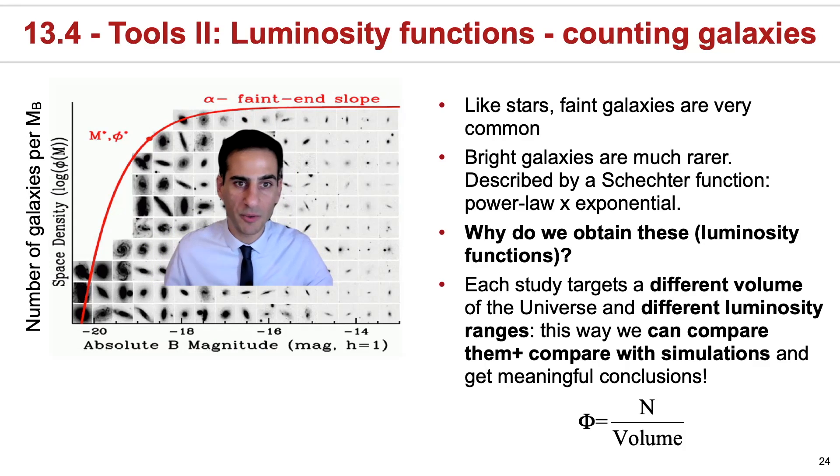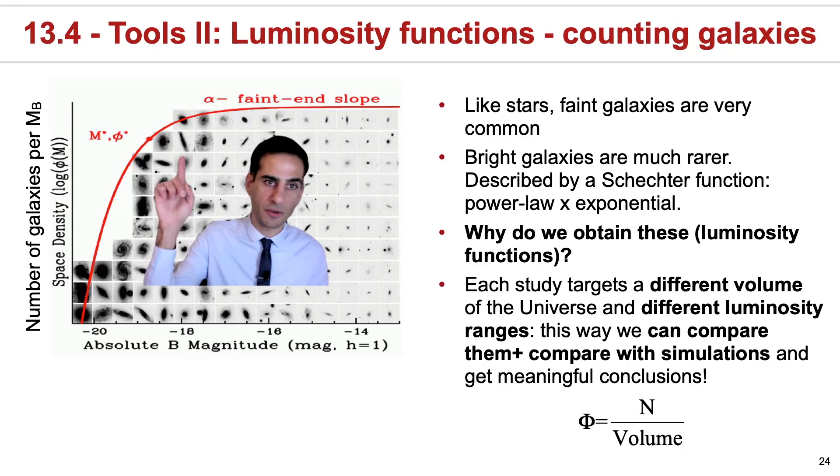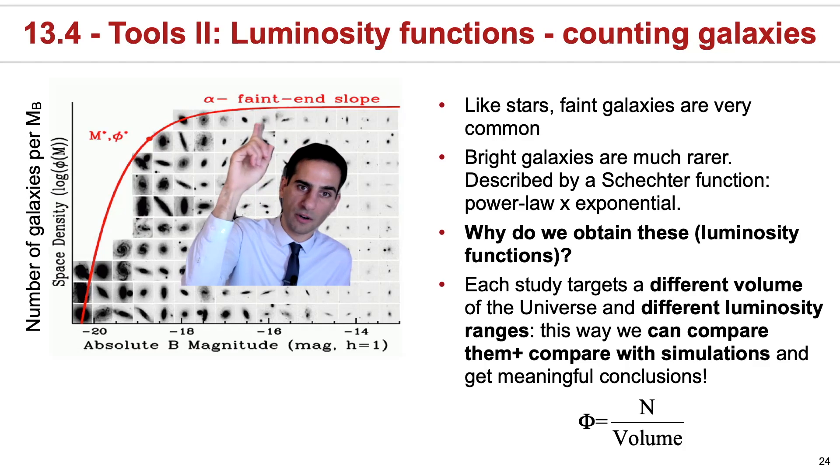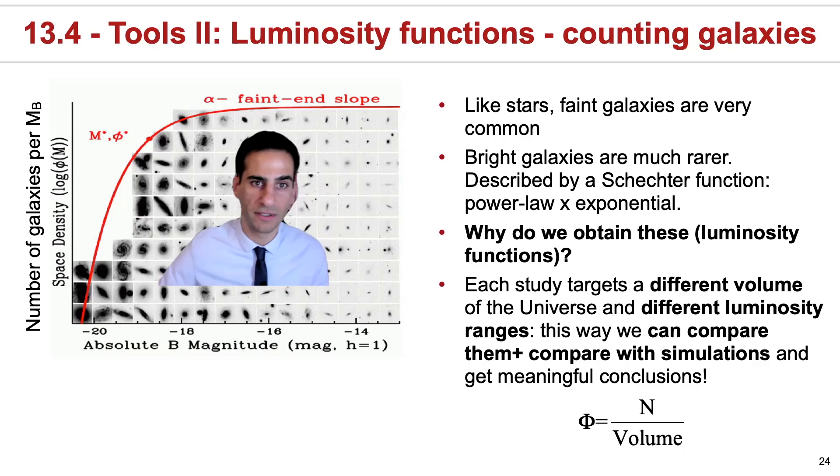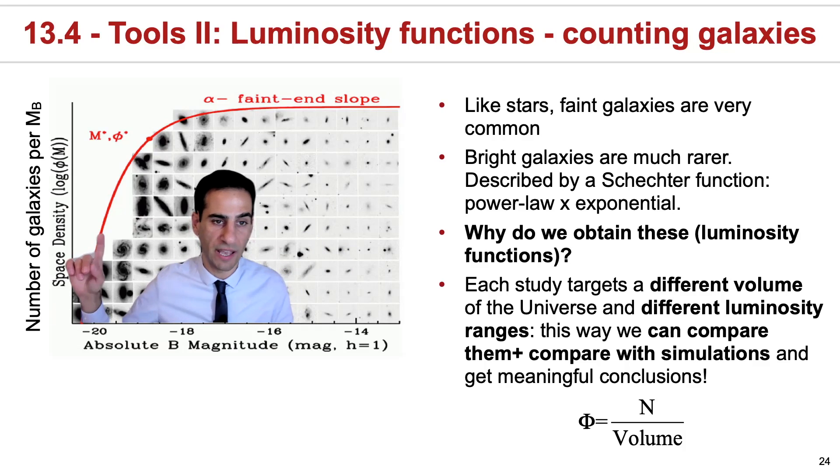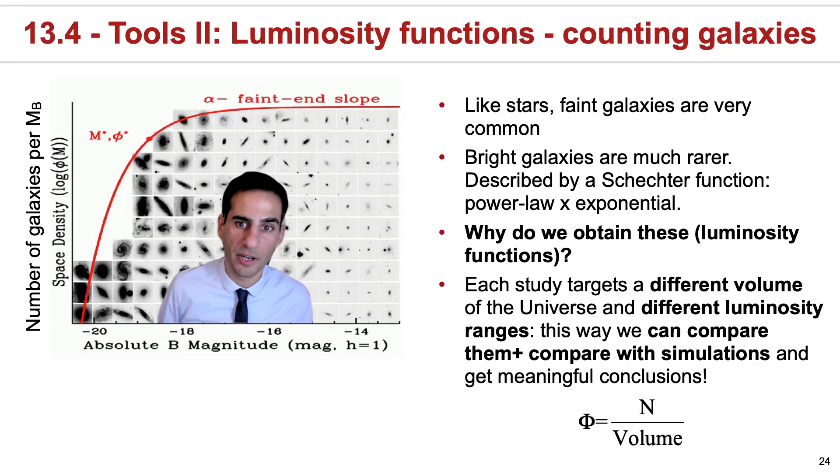For galaxies, there is an actual very simple function that can describe the behavior of the luminosity function that is a combination of a power law for faint luminosities and an exponential decay for very bright luminosities.